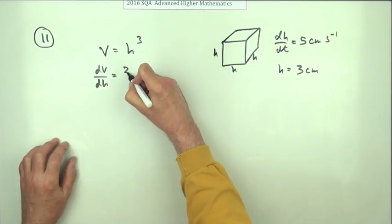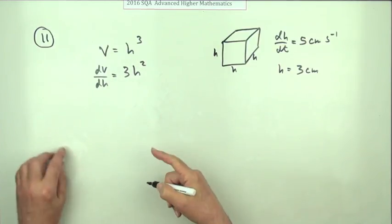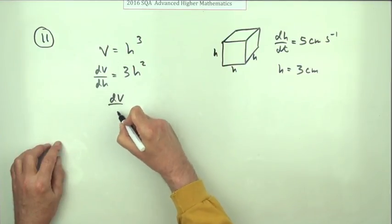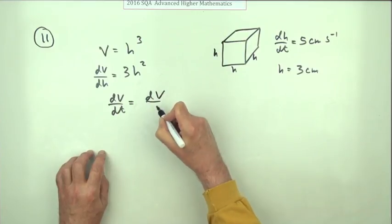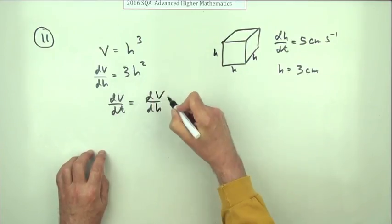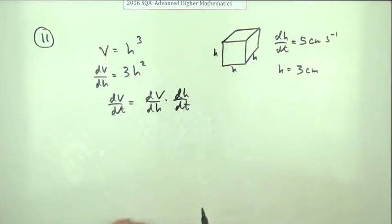If you want dV/dt, you would say, well I don't know dV/dt, but I know dV/dh and I can multiply that by dh/dt, because I was told that to begin with.